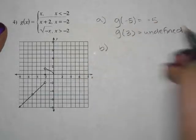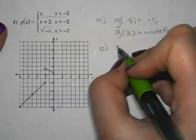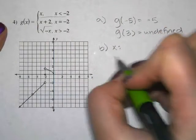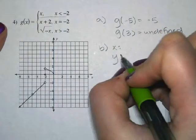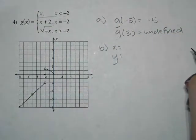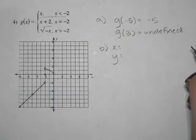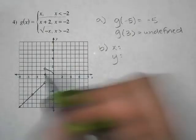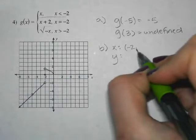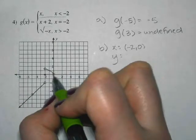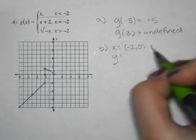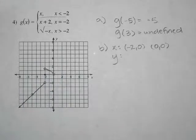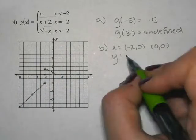For part B, just look at the graph and identify the x-intercepts and the y-intercepts. Can anyone see any x-intercepts? Negative 2 for sure, and I see one more — 0, 0 right here. And then the y-intercept is also 0, 0.